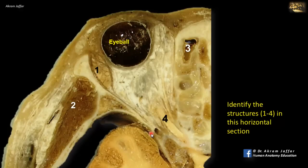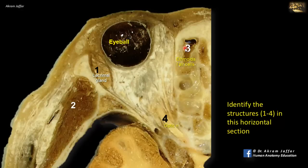Identify structures one to four in this horizontal section. This is a horizontal section of the front of the head. Clearly visible is the eyeball, the retroorbital fat, and a gland in the superior lateral aspect of the orbit — the lacrimal gland. At the apex of the orbit, a nerve passes from the region of the middle cranial fossa through the optic canal — this is the optic nerve. Medial to the orbit, separating it from the nose, are the ethmoidal air cells; structure 3 represents the anterior ethmoidal air cells. Structure 2 is located on the lateral side, behind the orbit, where the temporalis muscle — one of the four muscles of mastication — is seen.